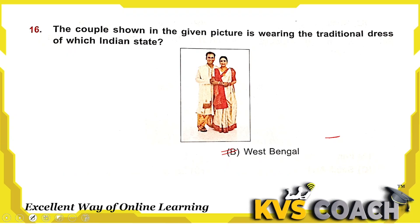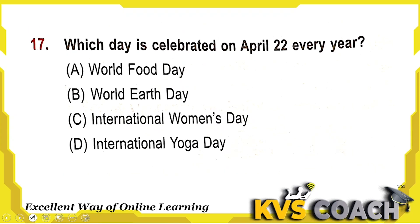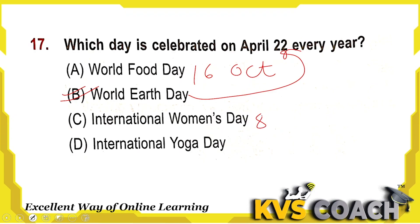Next: which day is celebrated on April 22 every year? World Food Day is celebrated on 16th October. World Earth Day is celebrated on 22nd April — so that is the right answer. International Women's Day is on 8th March, and International Yoga Day is on 21st June. Option B, World Earth Day, is the right answer.